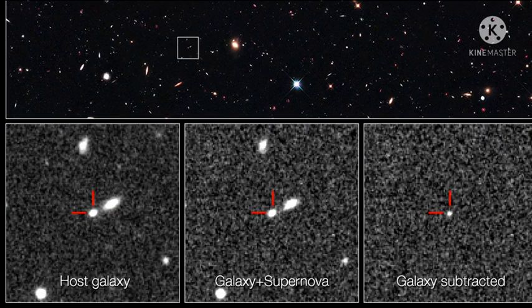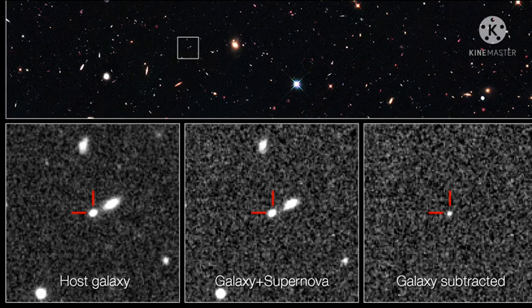The image at the far left shows the host galaxy without the supernova. The middle image, taken a year later, reveals the galaxy with the supernova. The supernova cannot be seen because it is too close to the center of the host galaxy. To detect the supernova, astronomers subtract the first image from the middle image to see the light from the supernova alone, shown in the image at the far right.